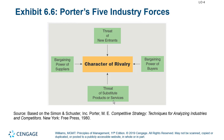The remaining two forces are the bargaining power of suppliers and the bargaining power of buyers — a tug of war between the two. If there are few suppliers, they have significant bargaining power over price. If there are few buyers, those buyers have more bargaining power. Understanding these forces helps you assess the competitive dynamics of any industry.